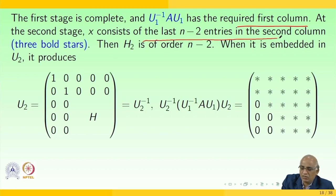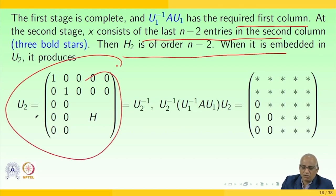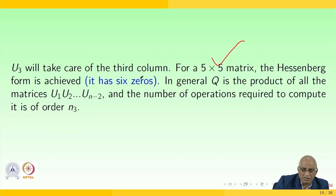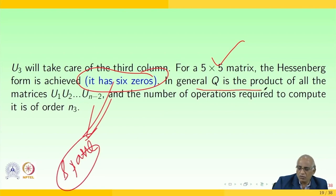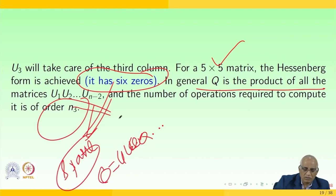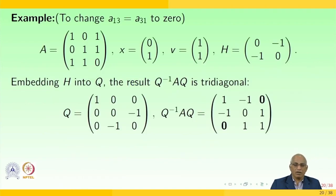H₂ is embedded into the matrix similarly. For a 5×5 matrix, U₃ takes care of the third column and the Hessenberg form is achieved — it becomes sparse. In general, Q is the product of all the U matrices: Q = U₁·U₂·...·Uₙ, and the number of operations required is of order N³.